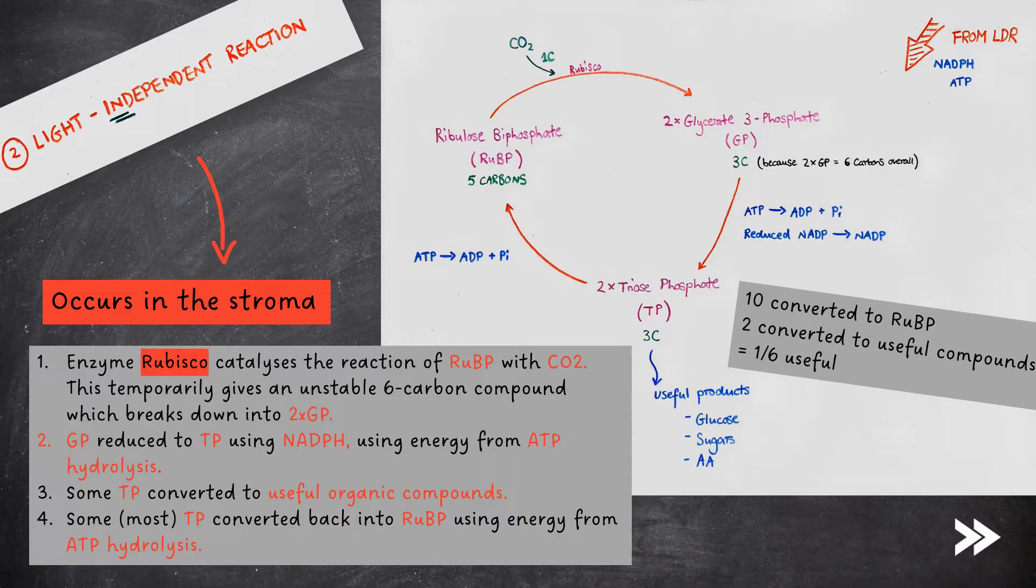Finally most of the TP molecules are converted back into RUBP using energy from ATP hydrolysis. Note that it is the inorganic phosphate ion that was released from ATP hydrolysis which gives the RUBP its phosphate hence the name ribulose biphosphate. Note also that it's important to know how many carbon atoms are found within each molecule. It is a good idea to learn this diagram off by heart and it may also be useful to be able to draw this diagram in exams.